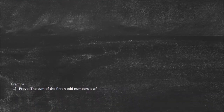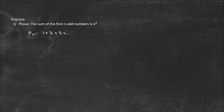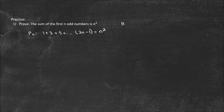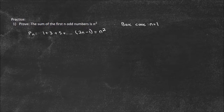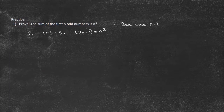Now let's see how this works in real life. Prove that the sum of the first n odd numbers is n squared. I want to write this as an equation, so p of n: the sum of the first n odd numbers is 1 plus 3 plus 5 plus ... plus 2n minus 1, equals n squared. Why 2n minus 1? Because for the base case n equals 1, the first odd number is 1, and 2 times 1 minus 1 equals 1. If you used plus 1, your first term would be 3, which would mess up the whole proof.